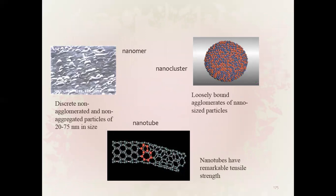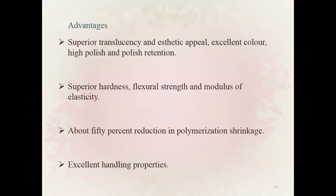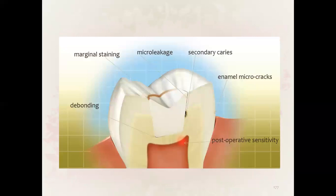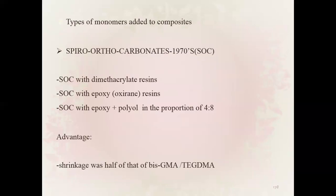Nanocomposite filler types include discrete non-agglomerated and non-aggregated particles of 20 to 75 nanometers in size, nanoclusters, and nanotubes. Advantages: superior translucency and aesthetic appeal, excellent color, high polish and polish retention, superior hardness, flexural strength and modulus. Approximately 50 percent reduction in polymerization shrinkage and excellent handling properties, reducing debonding, marginal staining, microleakage, secondary caries, enamel microcracks, and post-operative sensitivity.